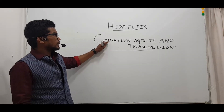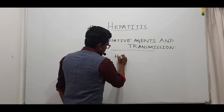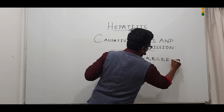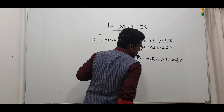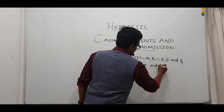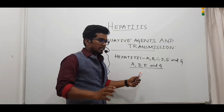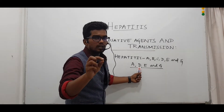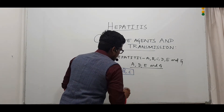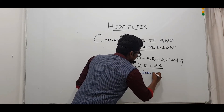Moving ahead, let me now tell you the causative agents and transmission of this disease. There are six strains of hepatitis: hepatitis A, B, C, D, E, and G. Among these, hepatitis A, D, E, and G are caused due to unhygienic practices and through contaminated water and food — they are transmitted through the oro-fecal route, that is through the digestive tract. Hepatitis B and C are transmitted by blood and sexual intercourse, and can be referred to as serum hepatitis.